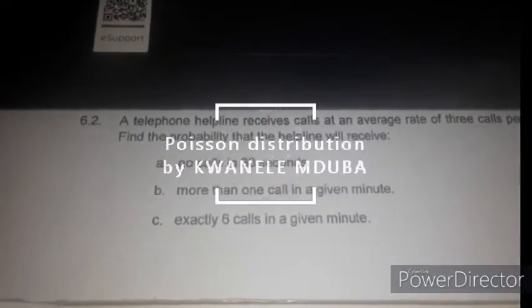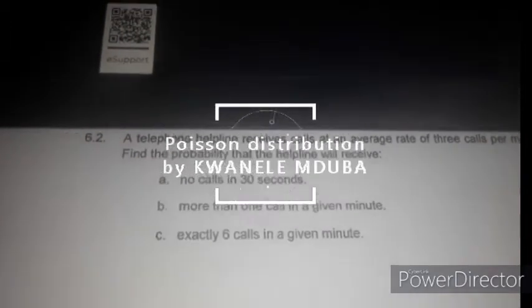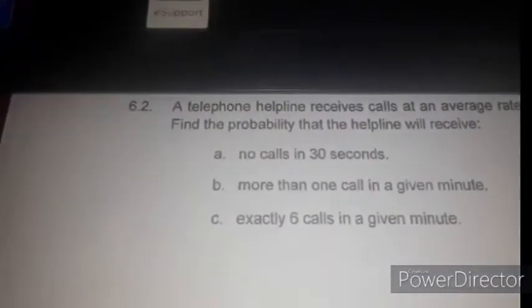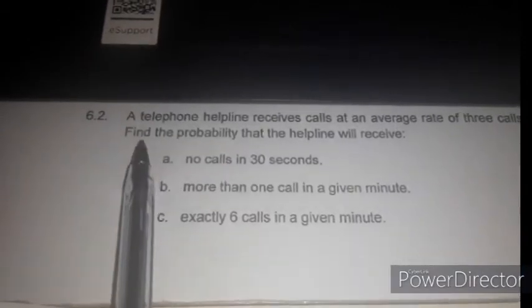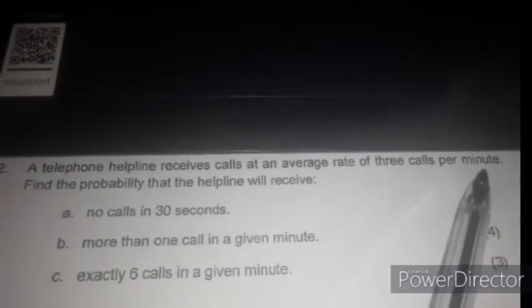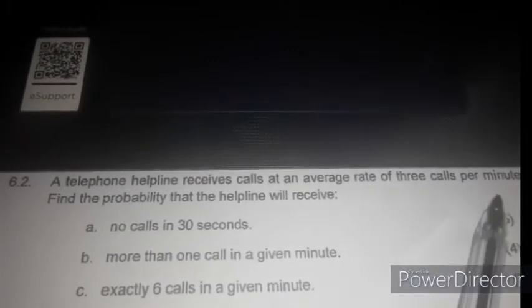Hi guys, welcome to another video. In this video I'm going to show you how to calculate the Poisson distribution. I'm going to do question 6.2. A telephone helpline receives calls at an average rate of three calls per minute.